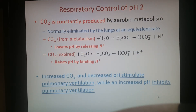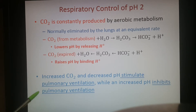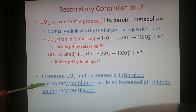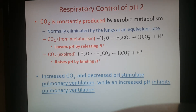CO2 is constantly produced by metabolically active cells but is normally eliminated by the lungs as fast as it's created. By adjusting pulmonary ventilation — how much you breathe — you determine how much CO2 you get rid of or keep, and therefore how you adjust the pH in the body.